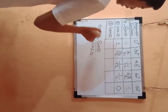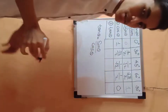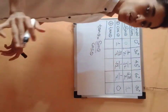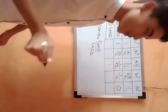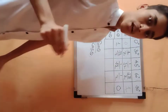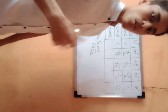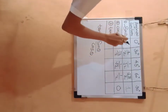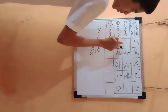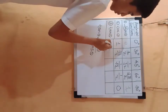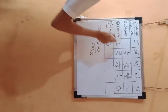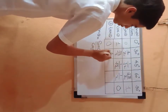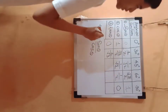So tan of 0° equals sin 0° divided by cos 0°, which is 0/1 = 0. Then tan of 30° equals (1/2) divided by (√3/2); the 2s cancel giving 1/√3.